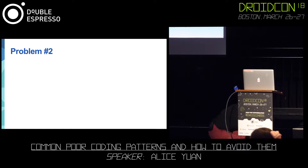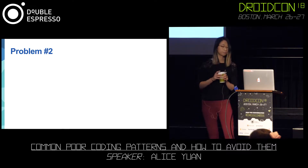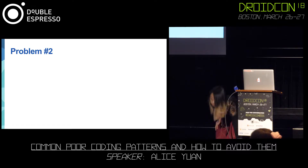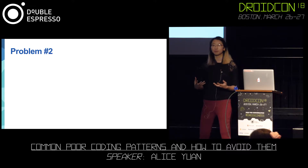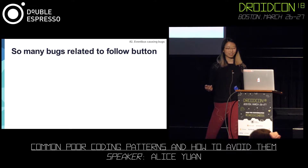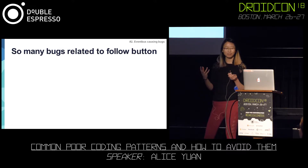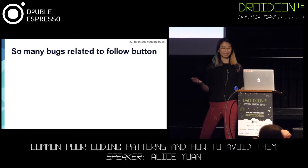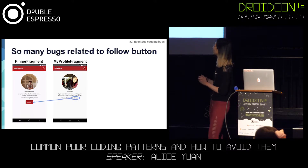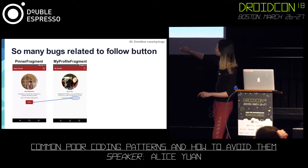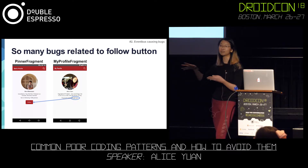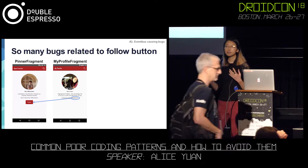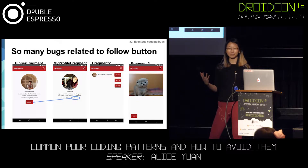All right, problem number two. So we previously talked about view architecture, and we're going to move on to something a little bit different — we're going to talk about events. In this example, we have so many bugs related with the follow button. Here's an example of what our fragments look like — again, super simple. When we click on the follow button, we just want to update the following text to say we're following 26 pinners instead of 25. But as we add more and more fragments, we realize this is becoming more difficult and we're starting to introduce bugs.